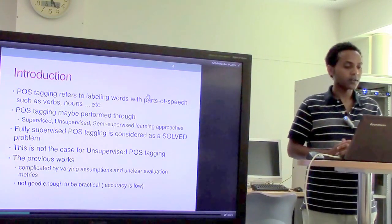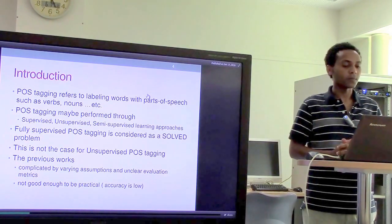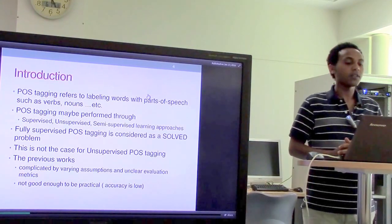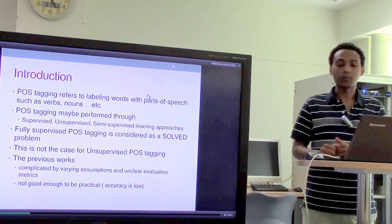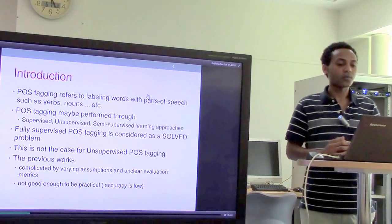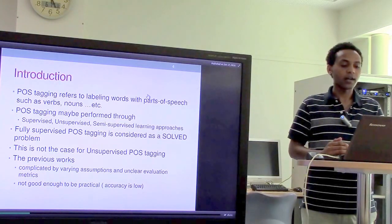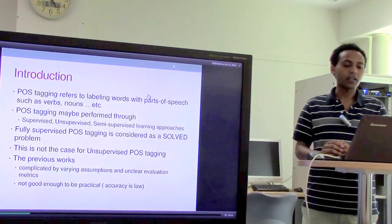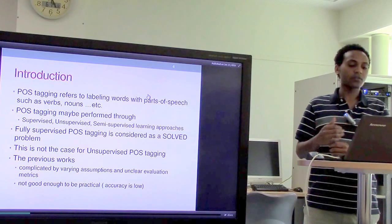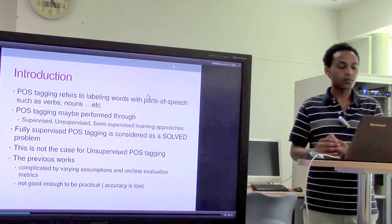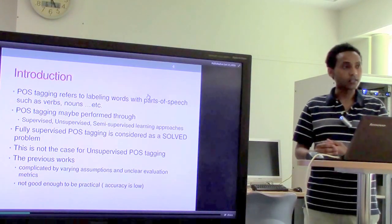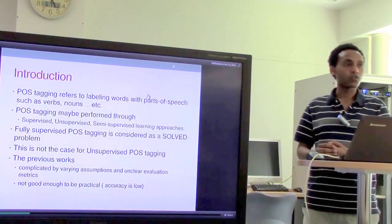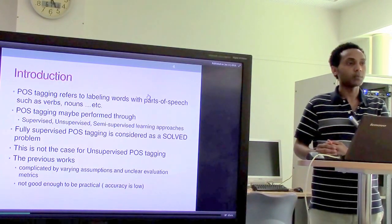Part of speech tagging is labeling of words with their appropriate part of speech, such as verbs and nouns, and approaches may be supervised, unsupervised, or semi-supervised. So far, fully supervised part of speech tagging is largely considered a solved problem because we have very efficient, high-performance taggers based on data. But this is not the case for unsupervised tagging, where the existing methods are complicated due to varying assumptions and unclear evaluation methods, and are not yet used for practical purposes because accuracy is very low.